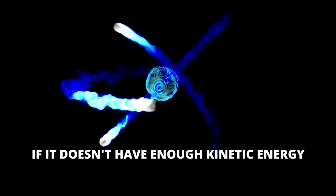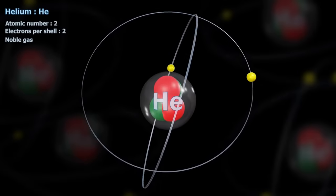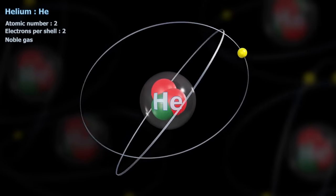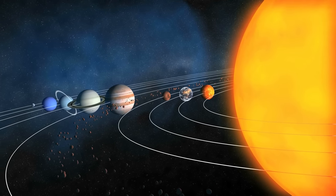We can liken this system to a planetary system. Therefore, one would expect electrons to orbit the nucleus in the same way that planets orbit stars.